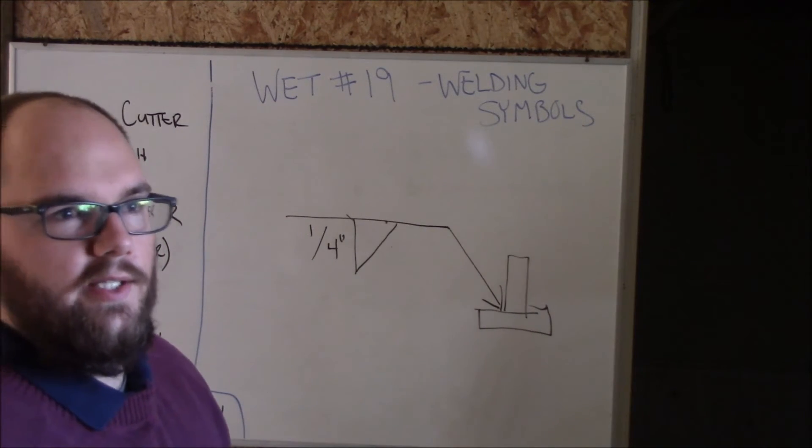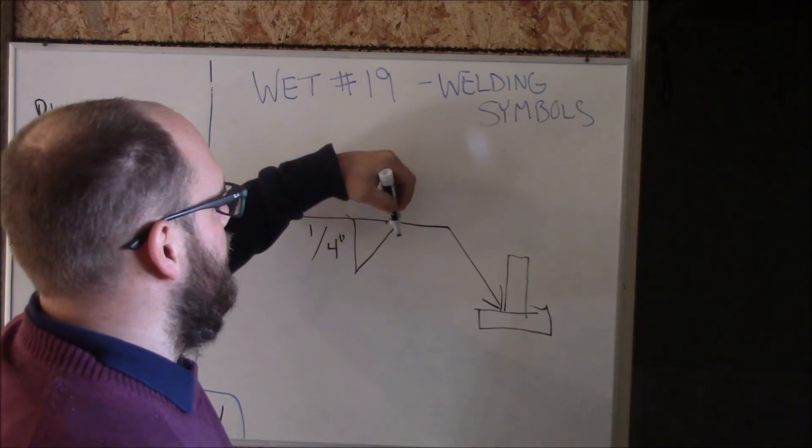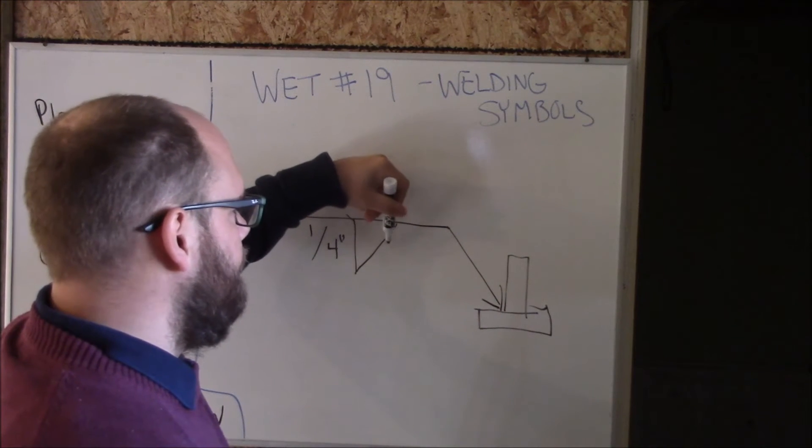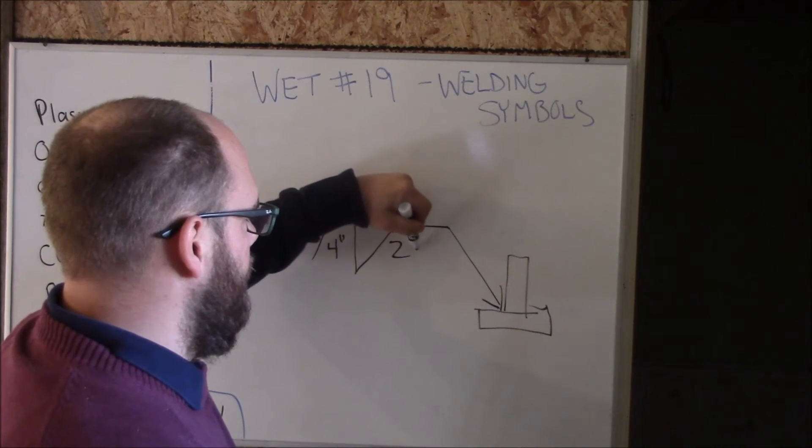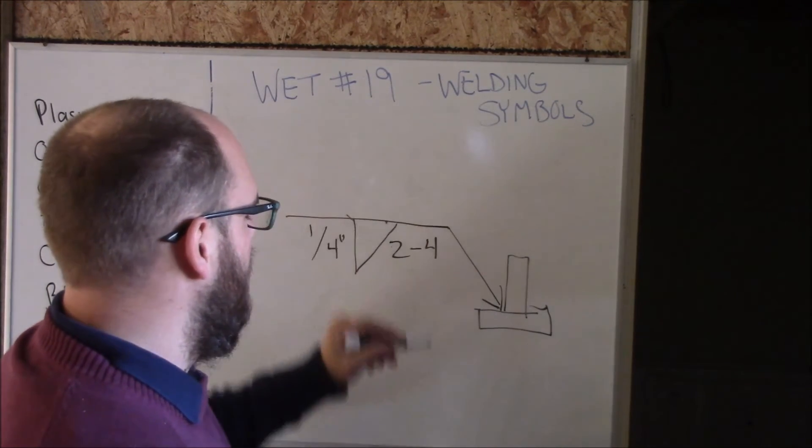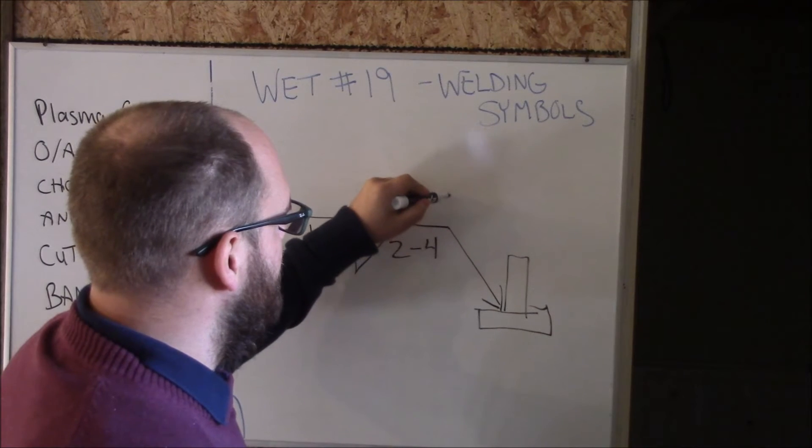If it's two numbers, that's the length of the weld and then the pitch. So say your, oh, let's just say a 2-4. And what you're going to end up with here is...